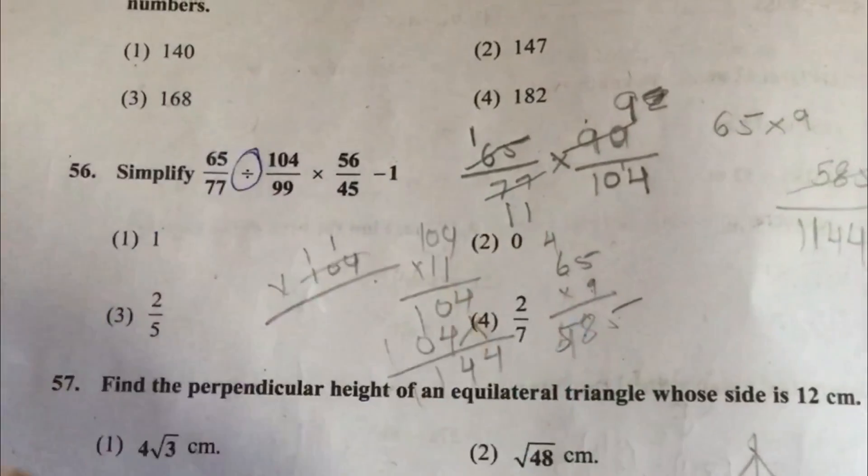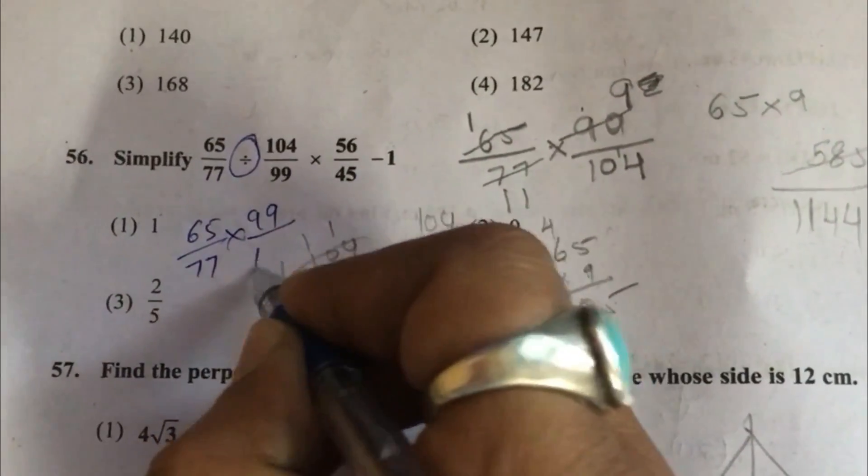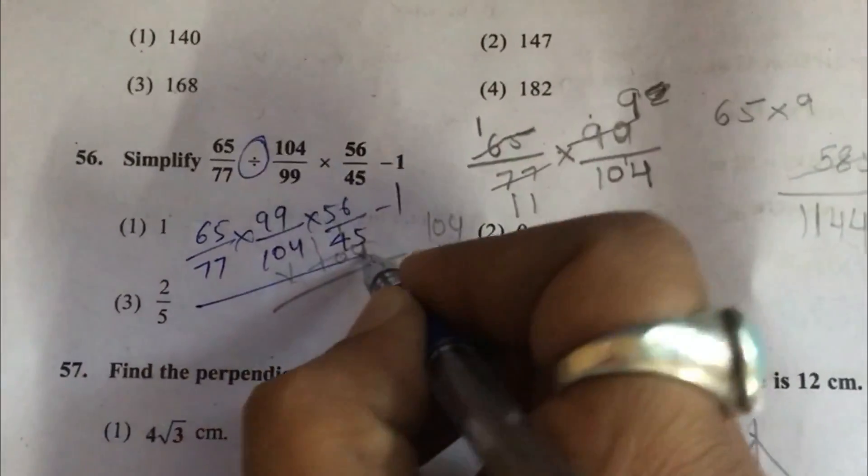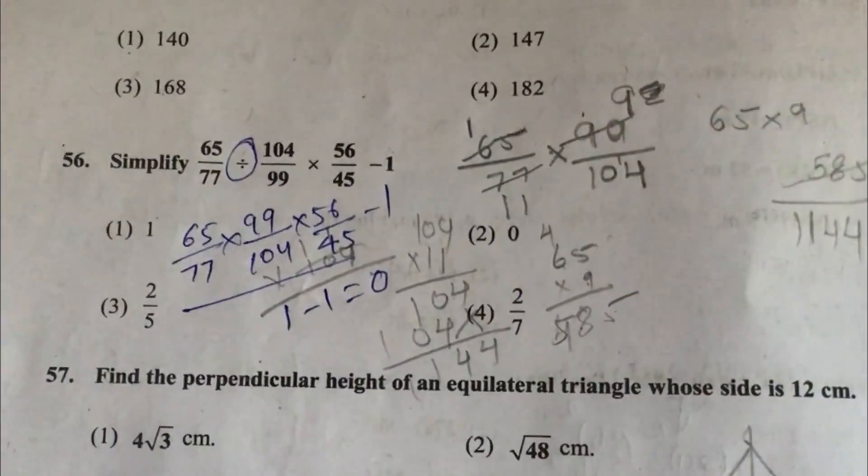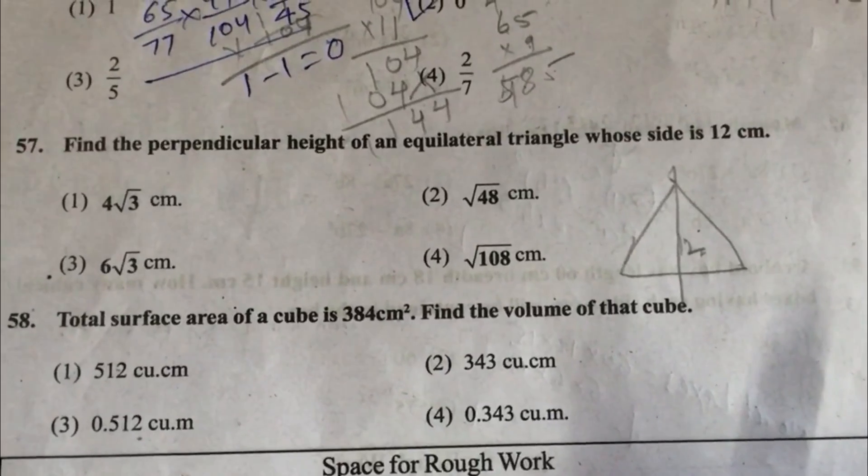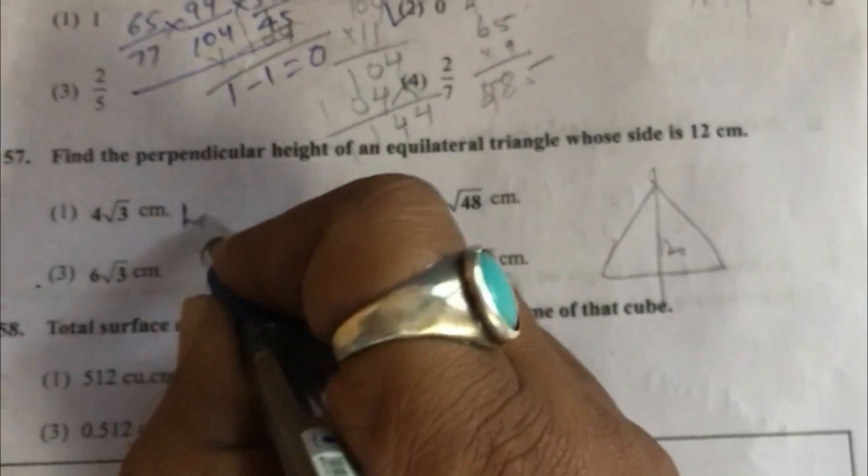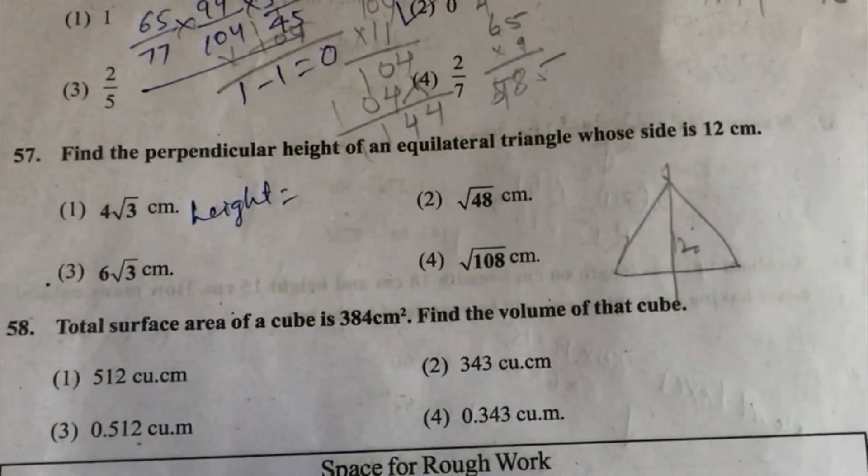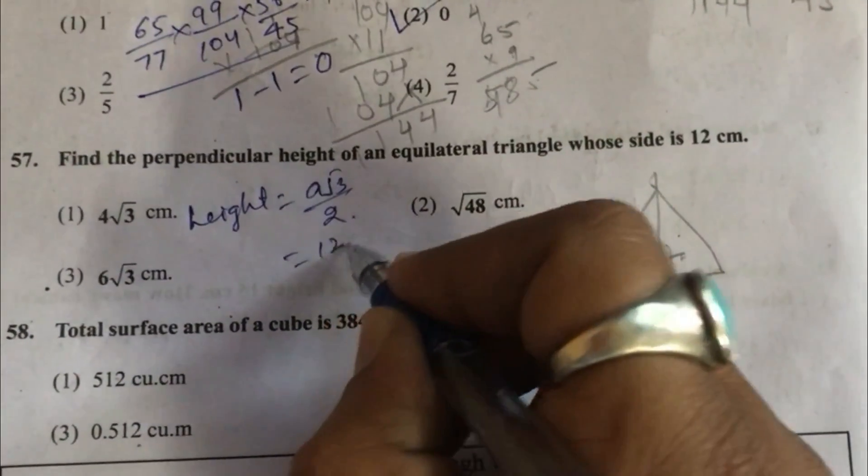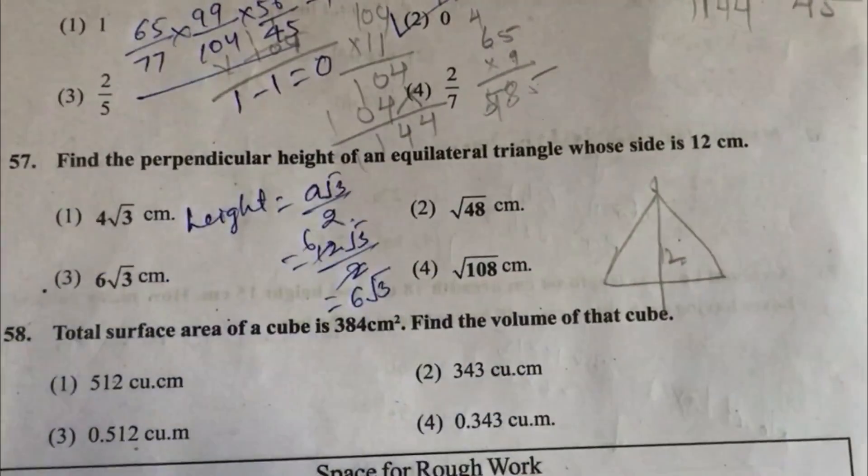Question 56: Simplify. When we convert division, it will become multiplication. After solving this, we will get 1. 1 minus 1 equals 0, so option 2. Question 57: Find the perpendicular height of an equilateral triangle whose side is 12 centimeter. Height of an equilateral triangle formula is a root 3 upon 2. A is side, that is 12 root 3 upon 2 equals 6 root 3, option 3.